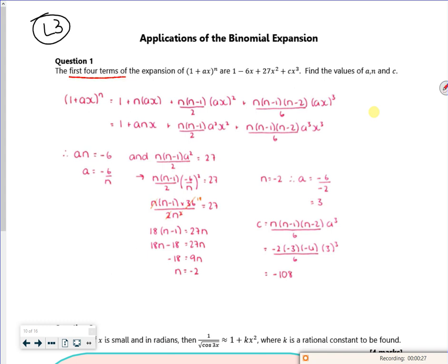So it says the first four terms of the expansion. So this is the first four terms of the expansion to there. Now they're the same as that. So if I sneak a 1 minus 6x plus 27x squared plus cx cubed, I hope you can see that the an x is minus 6x. So if the x is cancelled, I can get to an is minus 6.